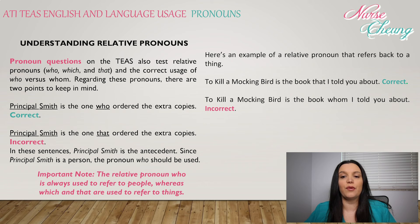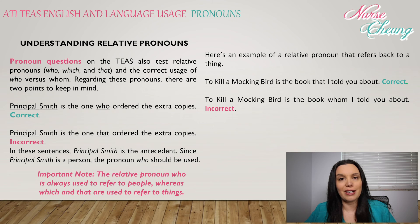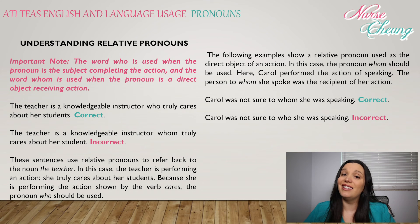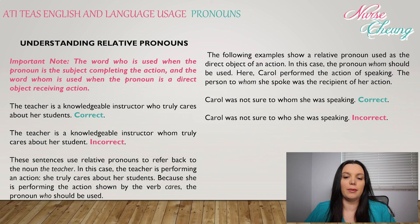Here's another example of relative pronouns referring back to things. 'To Kill a Mockingbird is a book that I told you about' — this is correct. 'To Kill a Mockingbird is the book whom I told you about' — this is incorrect, because the book is a thing. Here's another set of examples: 'The teacher is a knowledgeable instructor who truly cares about her students.' These sentences use relative pronouns to refer back to the noun 'the teacher.' Since the teacher is performing the action — she truly cares about her students — the pronoun 'who' should be used.